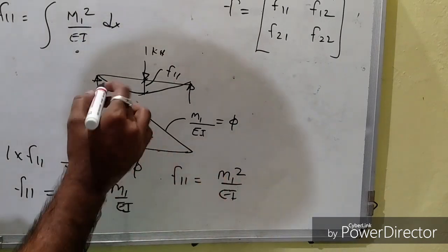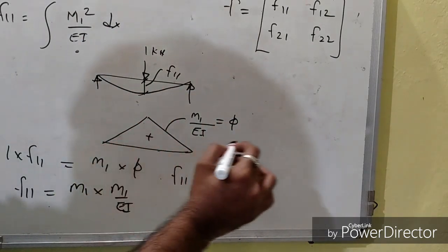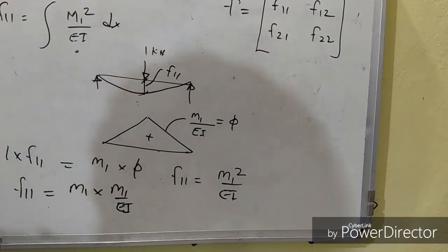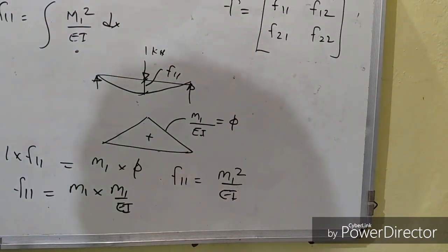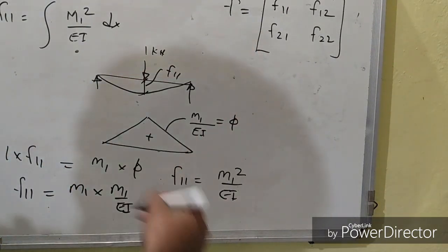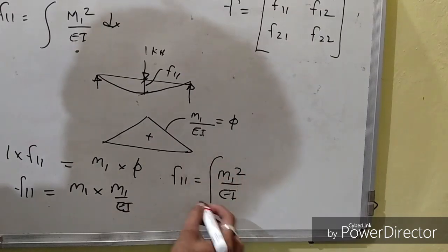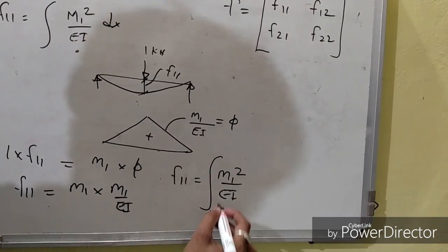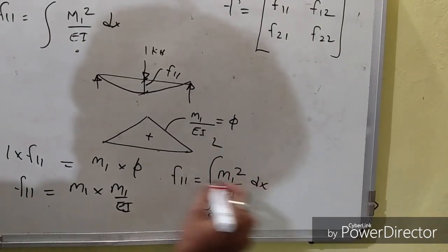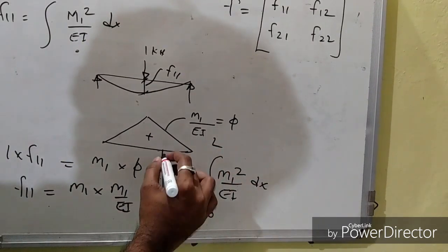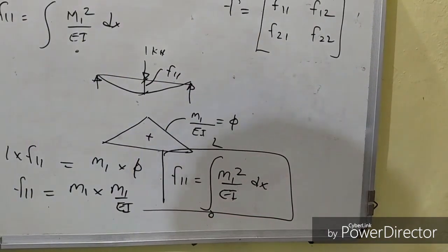The bending moment diagram is not constant — it varies from section to section. When it is varying, you need to integrate between the limits. So the final formula for F11 is: F11 = ∫ M1² / EI dx.